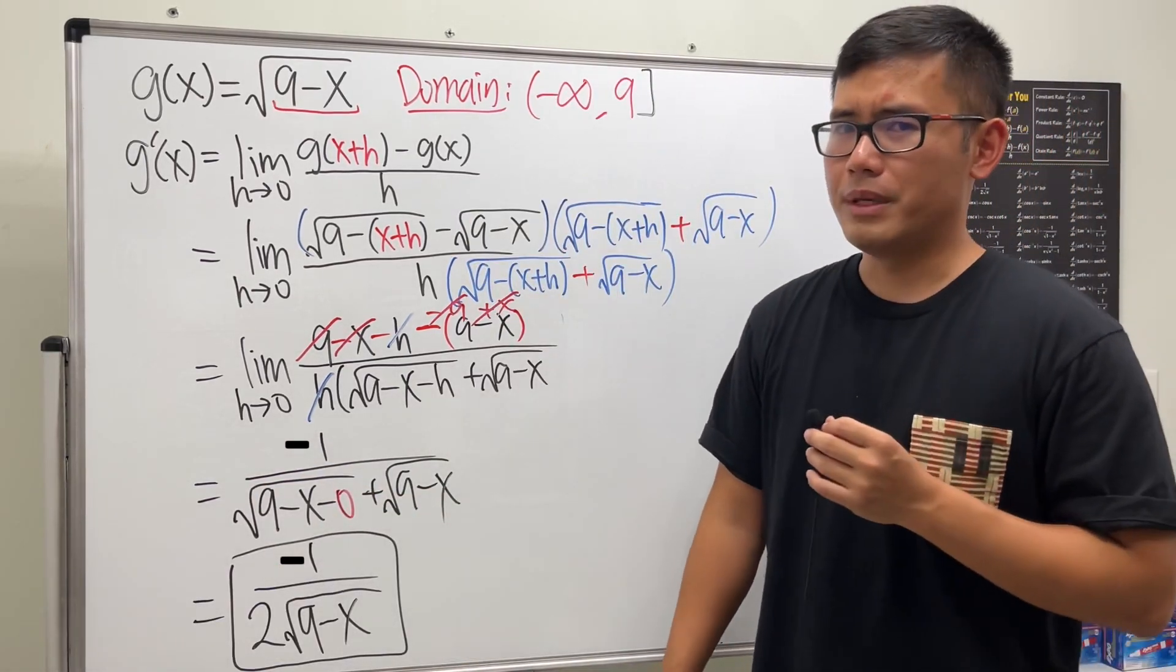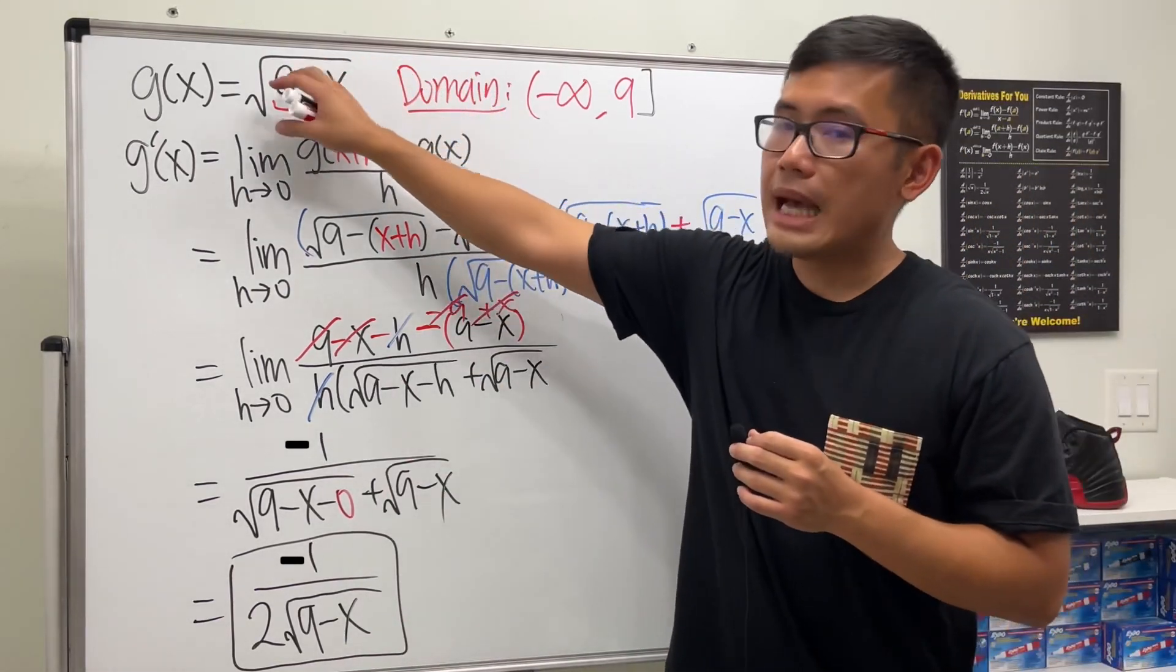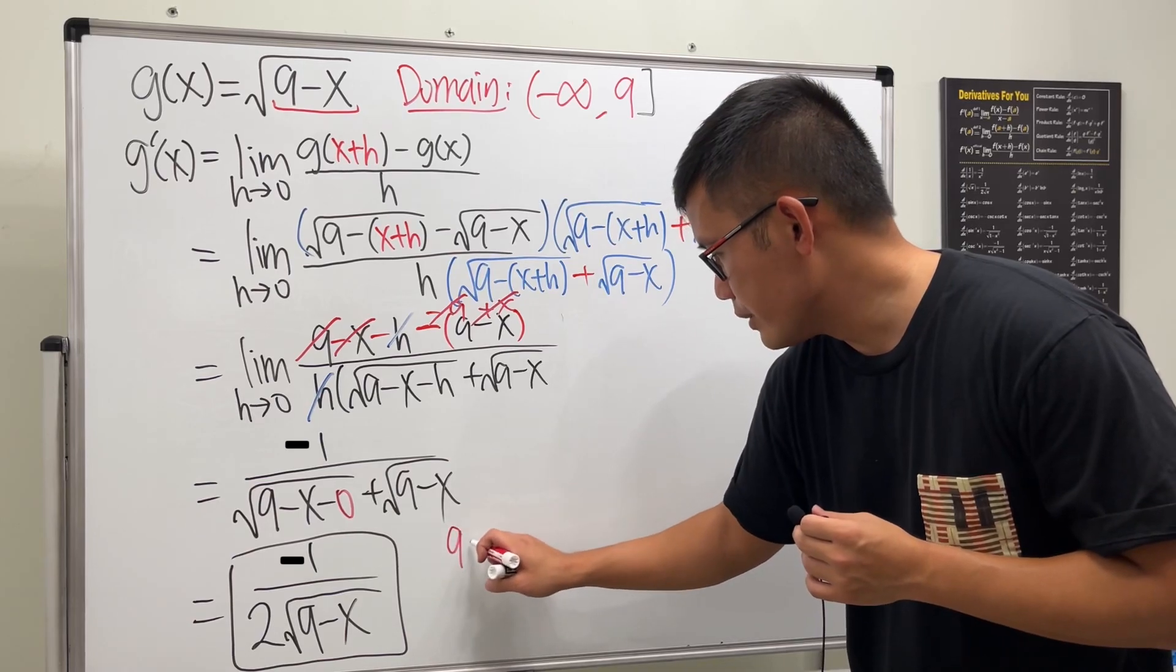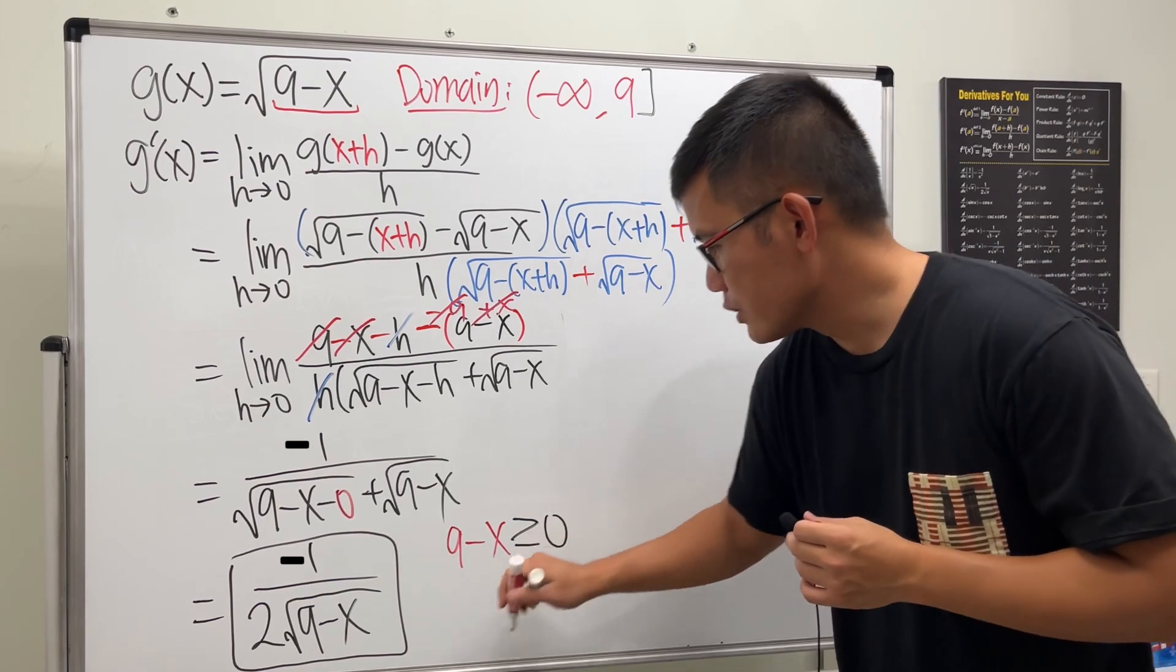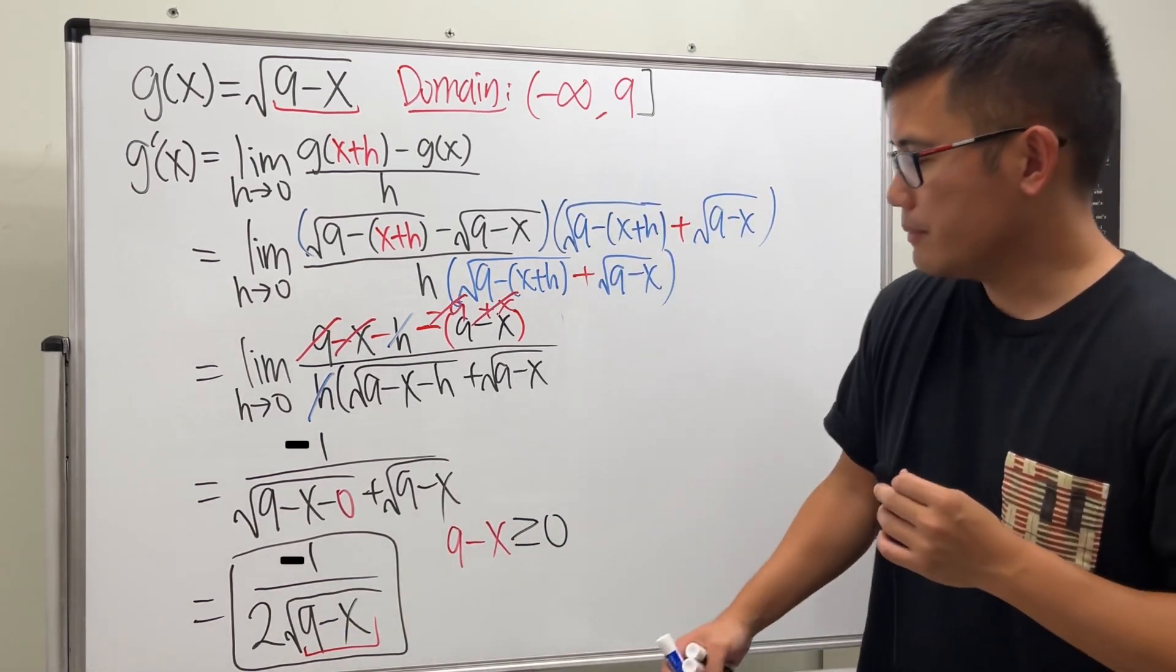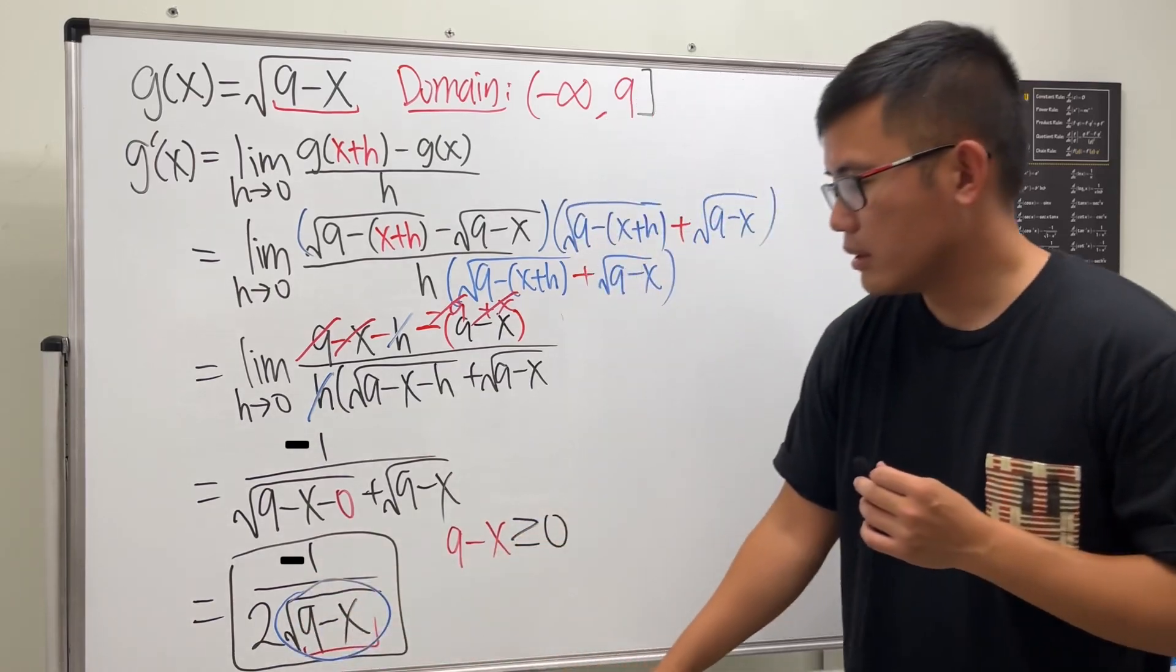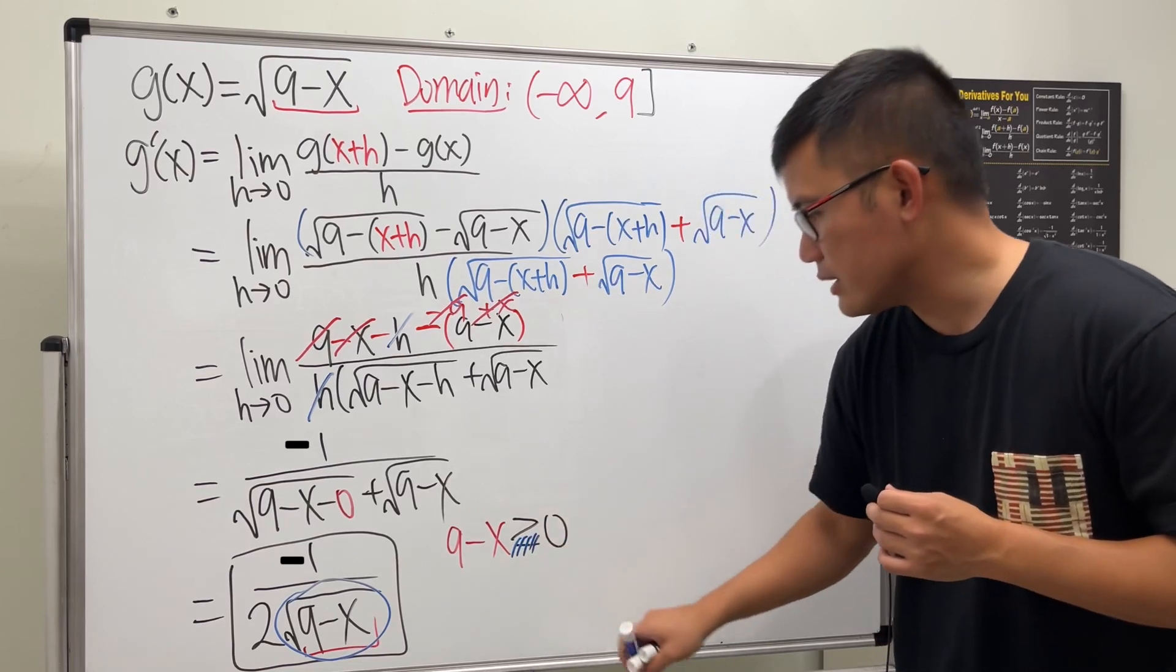And what's the domain though? Well, we will still have to worry about the inside being greater than or equal to 0. So this right here, we still have to put down 9 minus x has to be greater than or equal to 0, because we have that inside of the square root. However, we cannot have the bottom to end up with 0. Otherwise it's undefined. So in this case unfortunately we have to lose that equality.